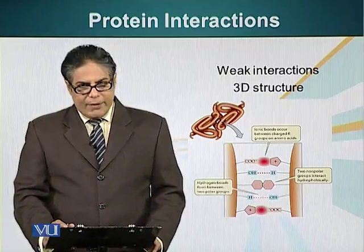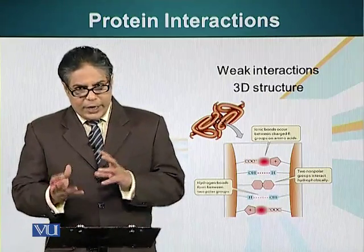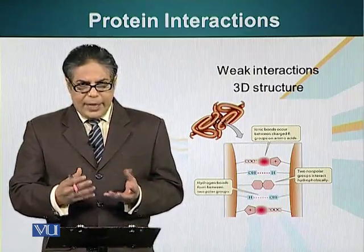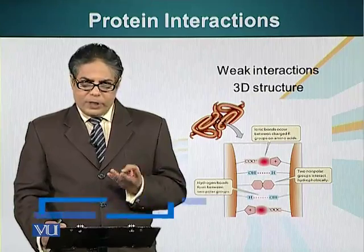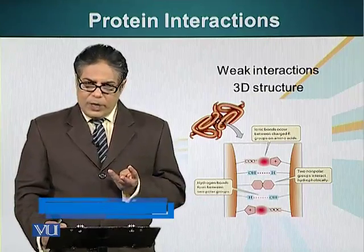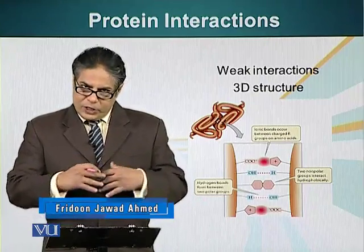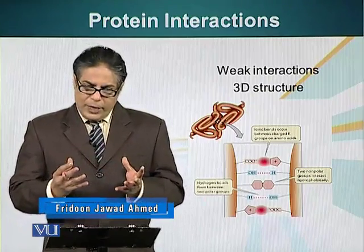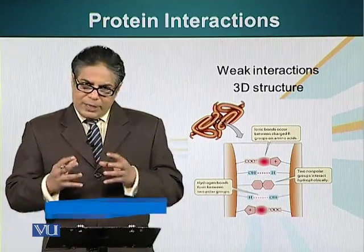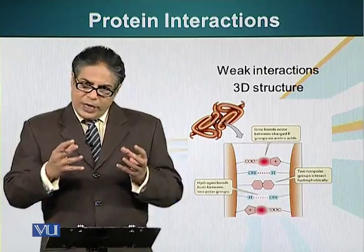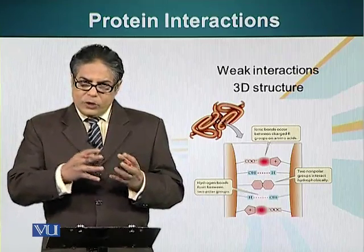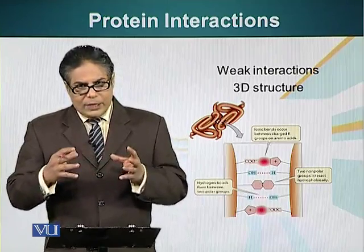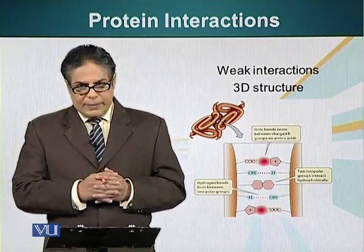Proteins carry information to interact with other molecules, other proteins for example, in two forms: the shape of the protein and the chemistry which is present on the surface of the protein. The shape of the protein is important because if it is to interact with another protein, the two shapes have to be mutually compatible, sort of like jigsaw puzzles fitting together.